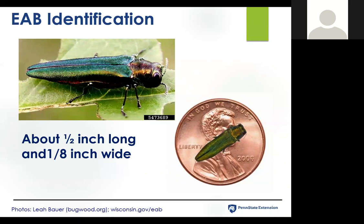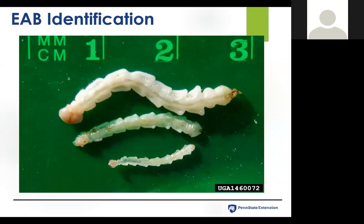The emerald ash borer is a pretty green bug — about a half inch long and an eighth inch wide. Looking at the larvae at different instar stages, I want to highlight the shape of the segments: from this picture you can see the larvae segments are somewhat bell-shaped. This is important because there are some native ash borers in the northeast, and they have a very different — more rectangular — shape to their segments. That's a good way to differentiate between the invasive non-native emerald ash borer and other native ash borers.